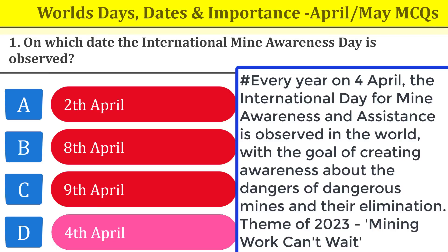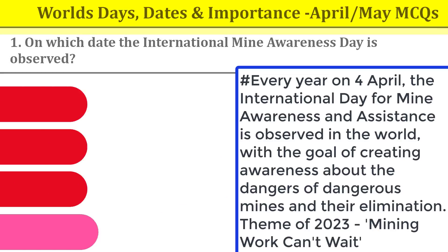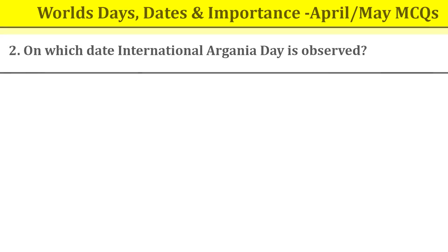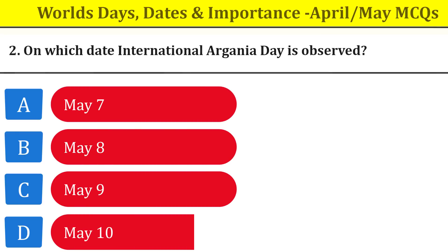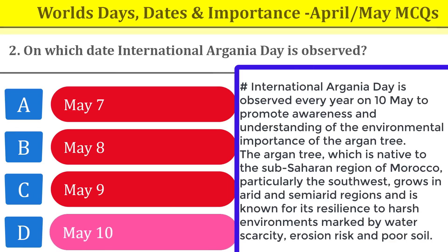All MCQs are very important — just go through them and subscribe to the channel. Question number two: on which date is International Arganiya Day observed? International Arganiya Day is observed on every 10th May, to promote awareness and understanding of the environmental importance of the argan tree. The argan tree is native to the sub-Saharan region of Morocco, particularly the southwest, and grows in arid and semi-arid regions known for resilience to harsh environments marked by water scarcity, erosion risk, and poor soil.